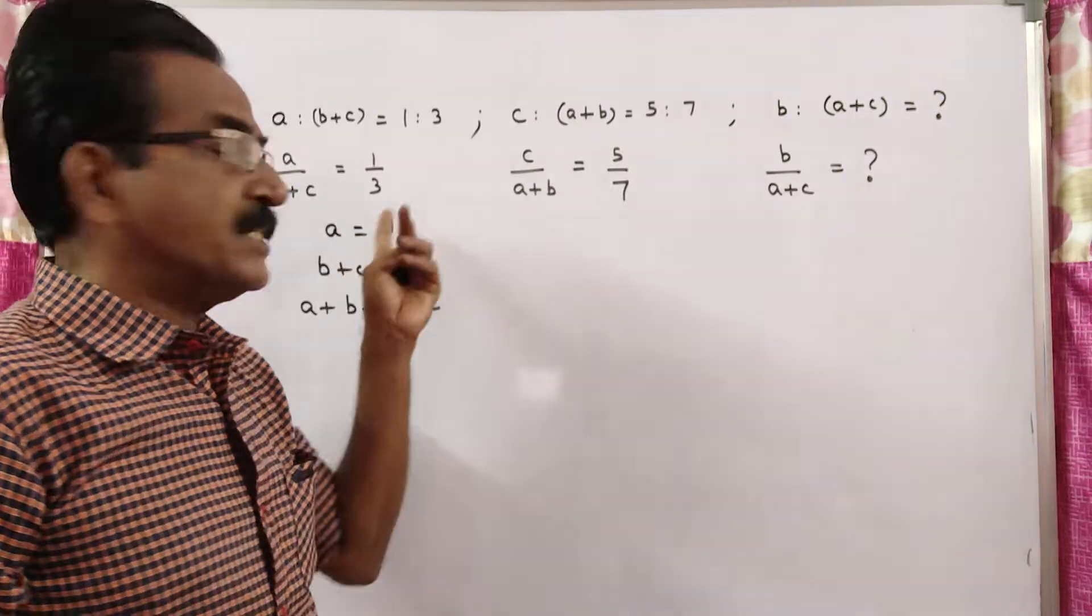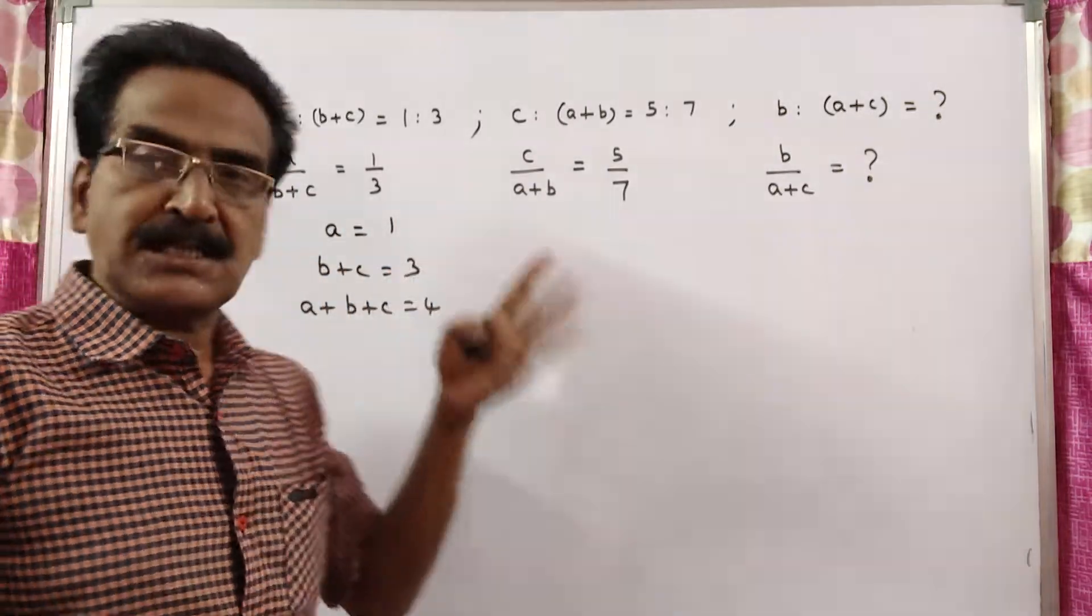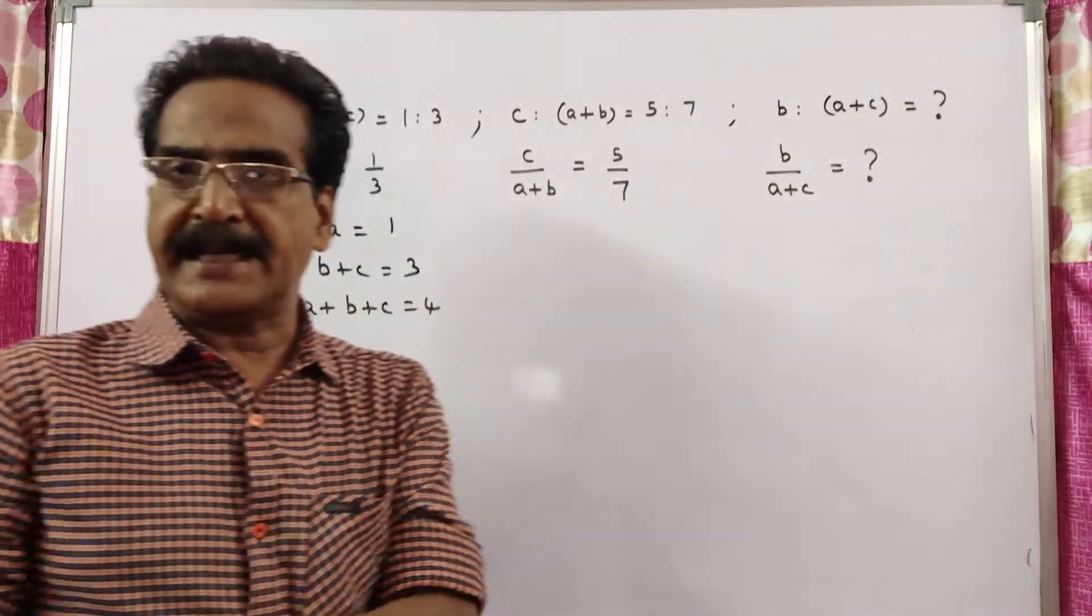Friends, you can take a is equal to 1k, b plus c is equal to 3k also, it doesn't make any difference.